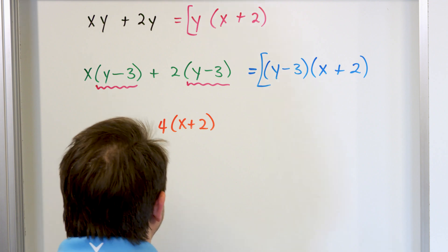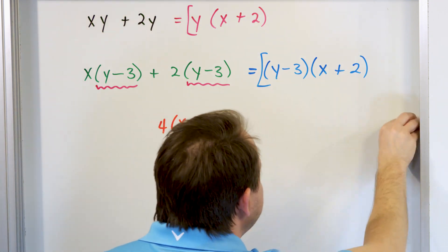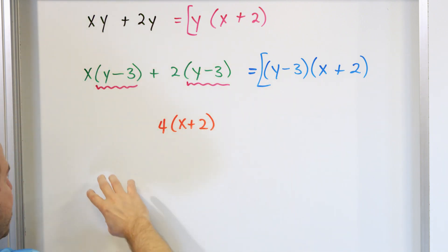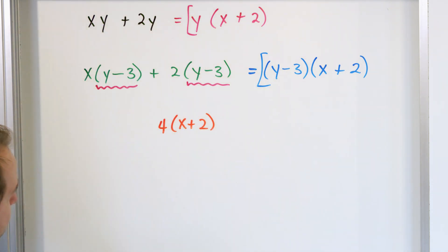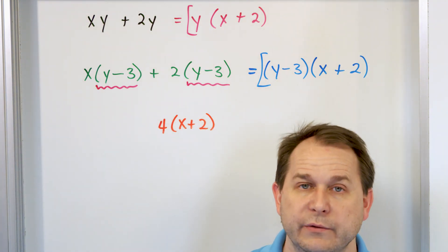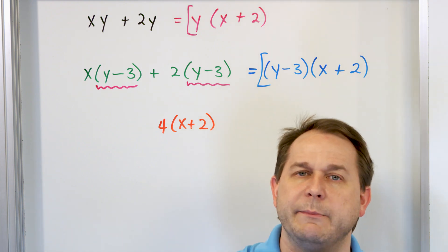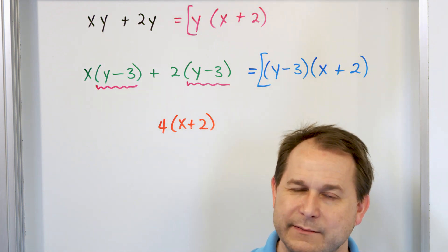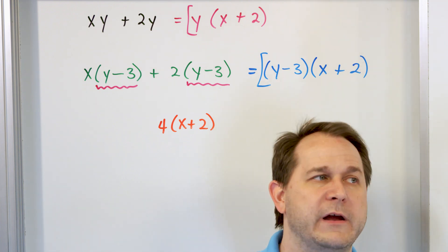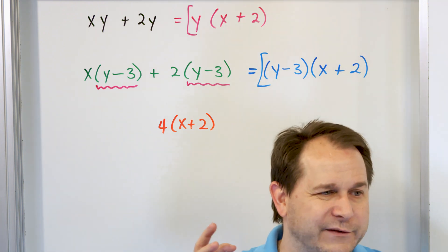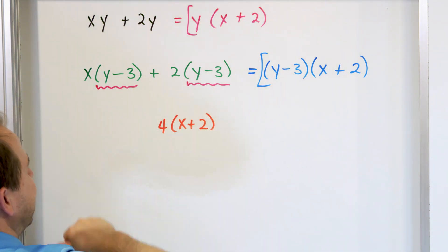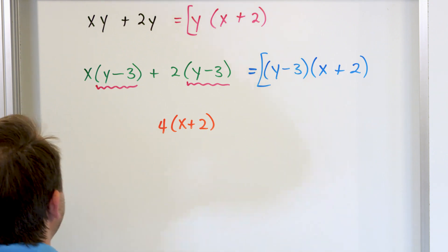If you want, you could use FOIL to expand everything out and you would see the left and right-hand sides are equal. The main idea about factoring by grouping is that you look for things common between terms to pull out — but sometimes those things can be large terms common to adjacent groups, like y minus 3 in this case.